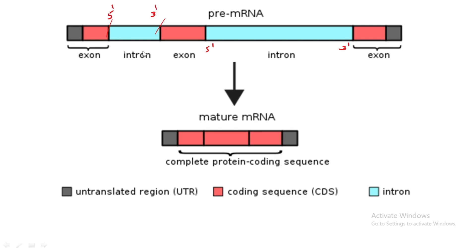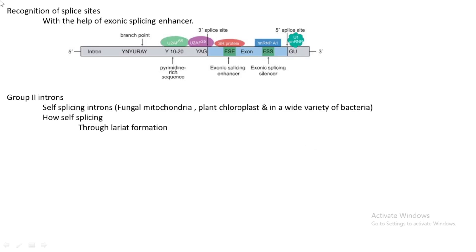Sometimes the mRNA may totally not get translated if any mistake happens during splicing, so it must be that accurate. This is a picture of the mature mRNA, and in this mature mRNA we cannot see any blue portions — meaning the mature mRNA contains only the untranslated regions and the protein-coding sequence, with a 5' cap and a 3' poly-A tail.